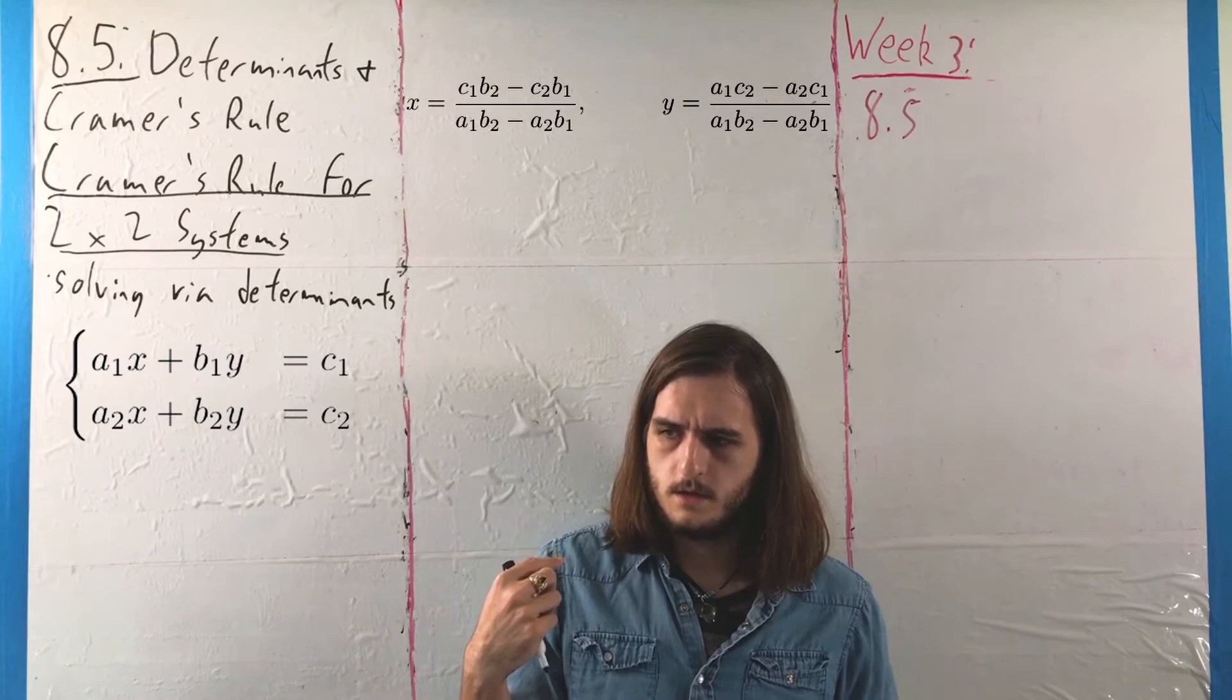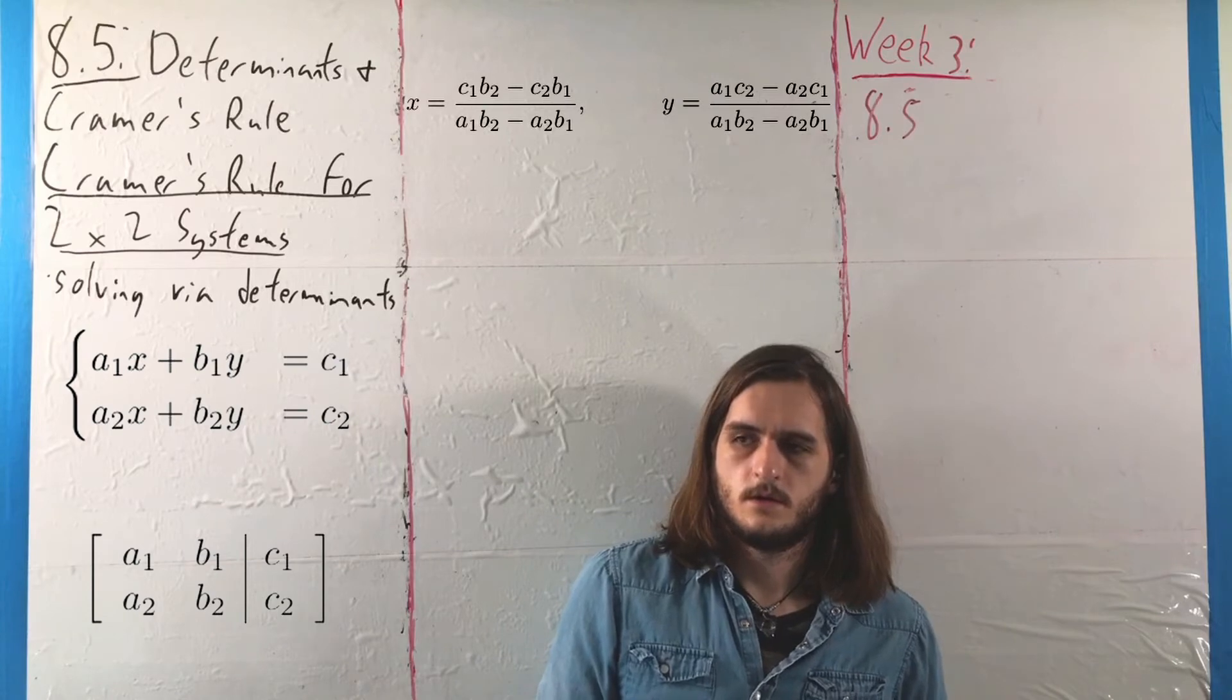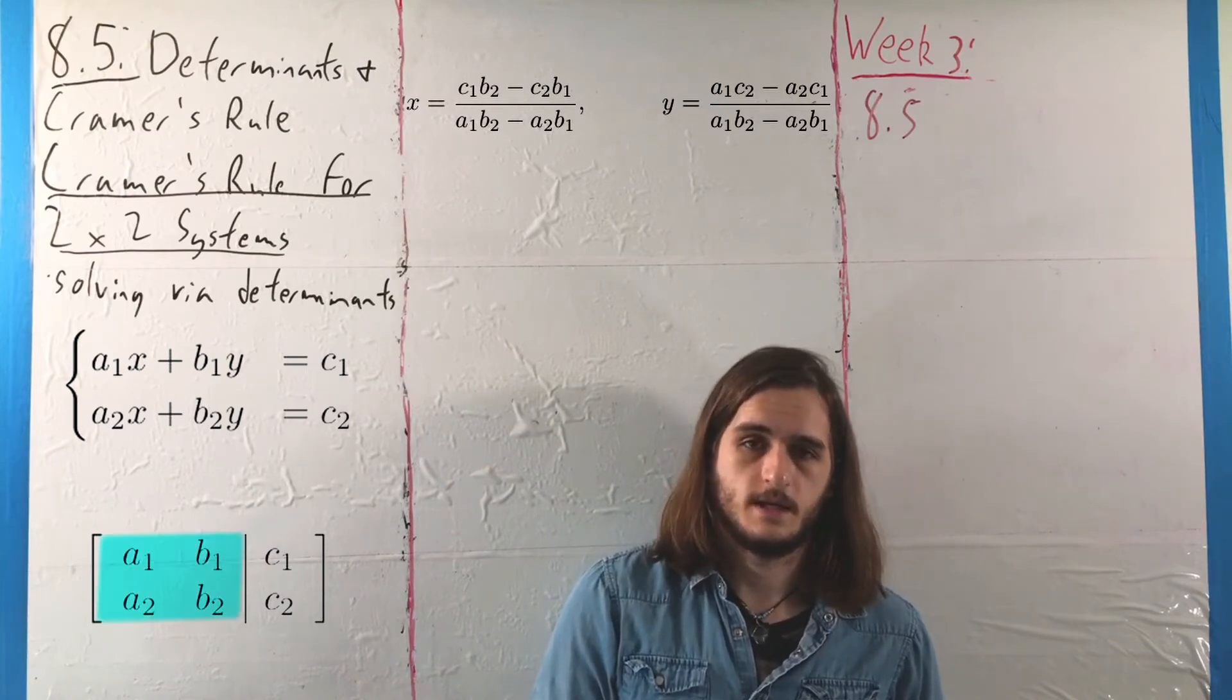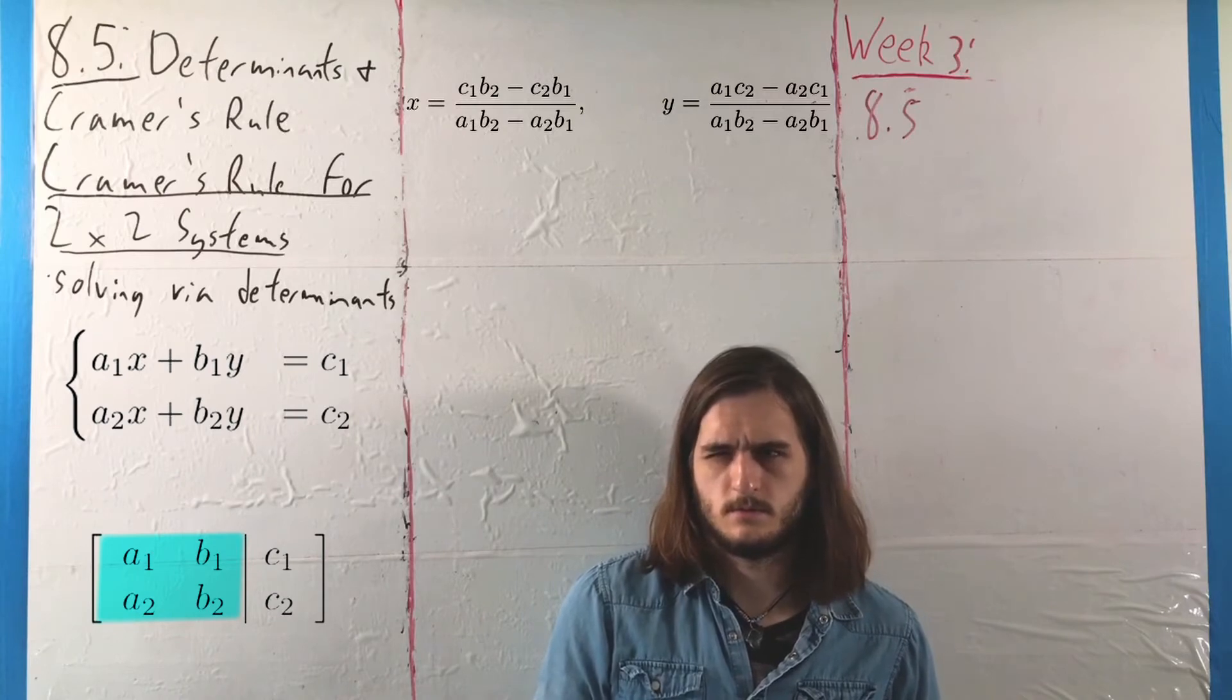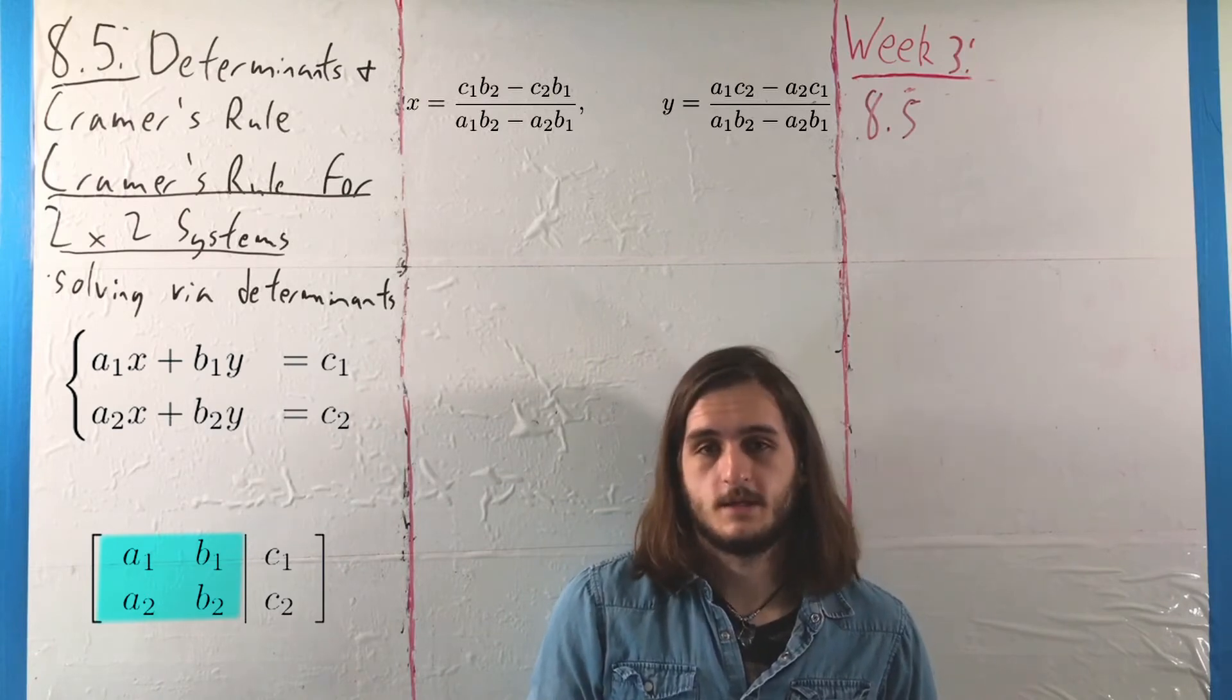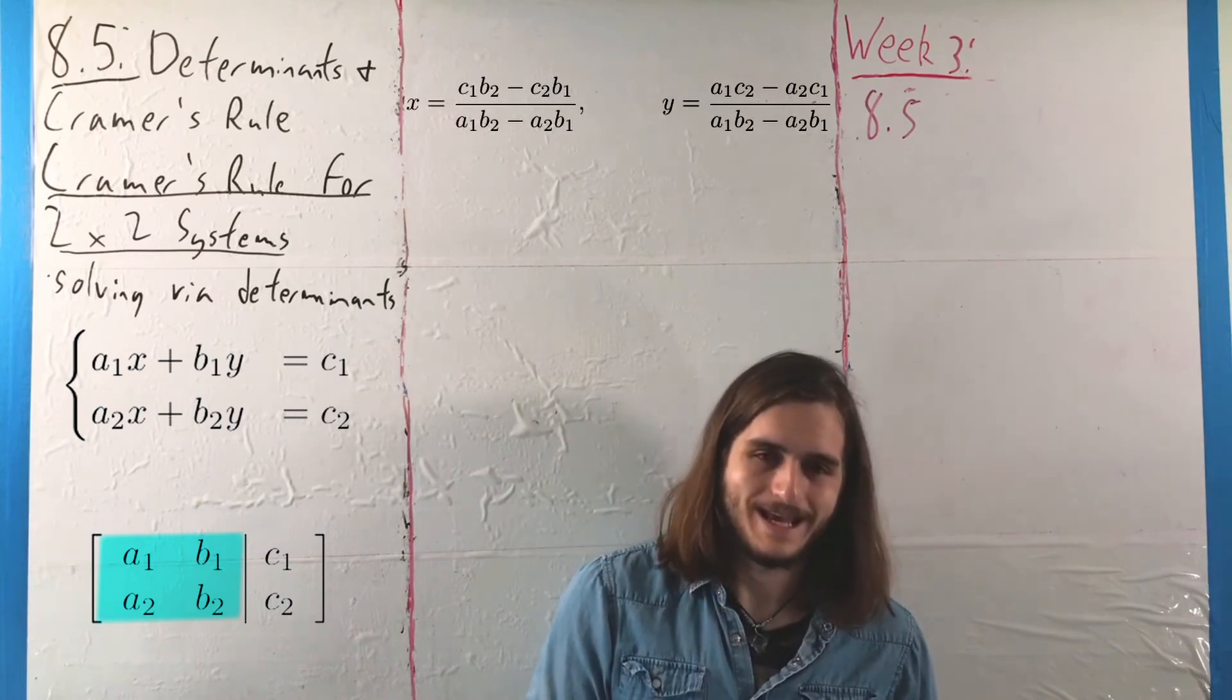and then call back that matrix of the original system, noting in particular the coefficients on the right side of the augmentation—left side, excuse me, it's my right, your left—but looking at that, we'll be able to see that if you took the determinant of the coefficient matrix, you would get the denominator in both cases.